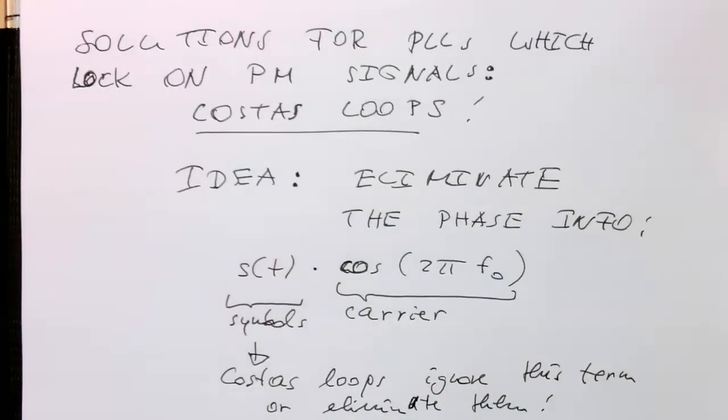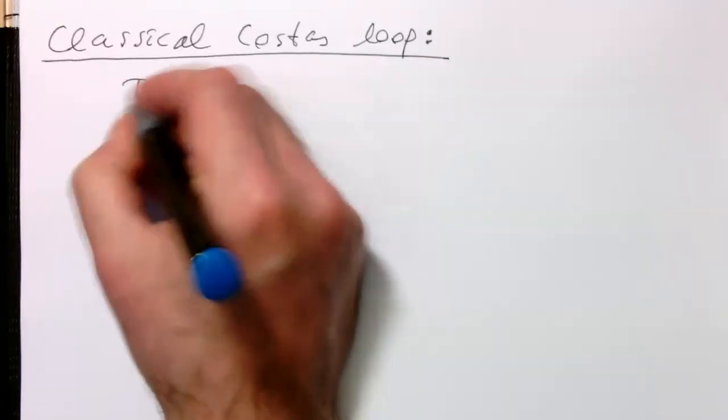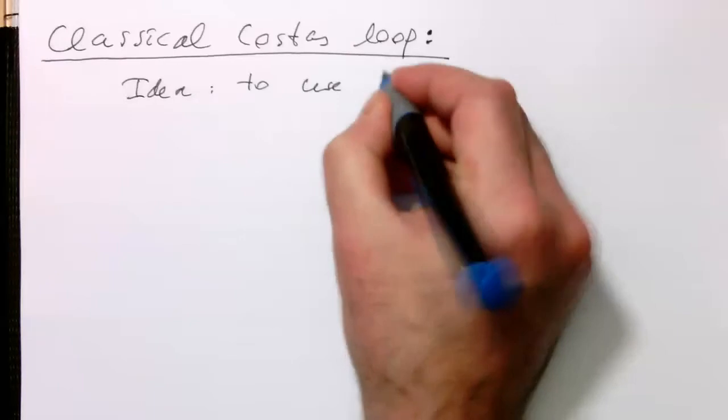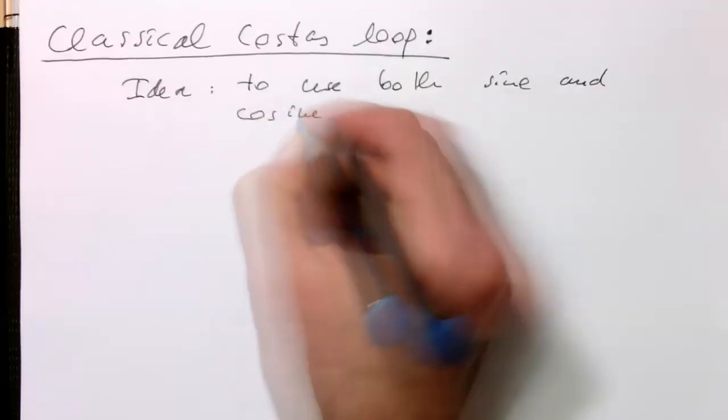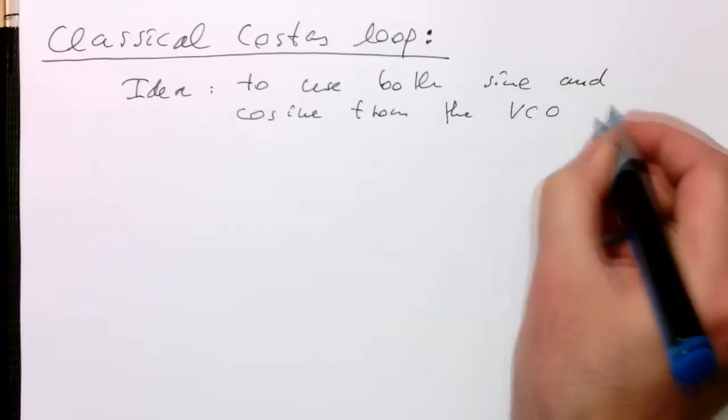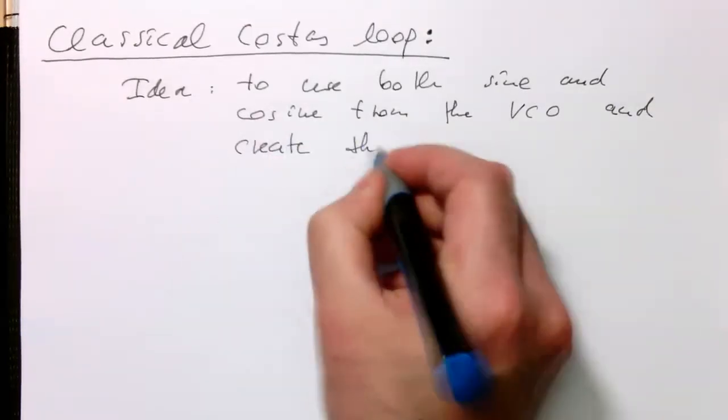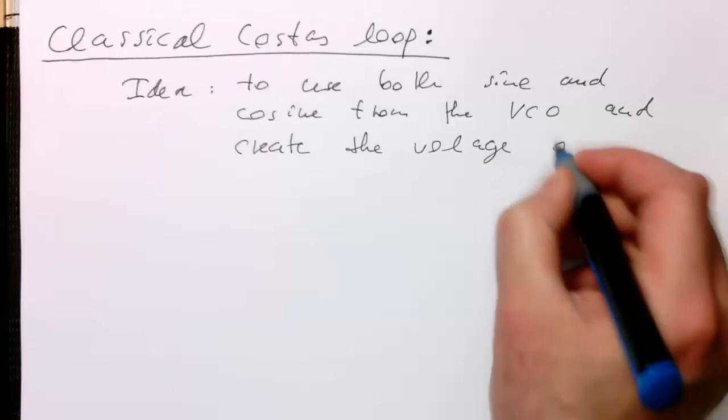The initial idea by Costa's, with probably nothing to do with the coffee shop chain, was developed in the 50s. The idea is to use both sine and cosine from the VCO and create the voltage by combining these two pathways.